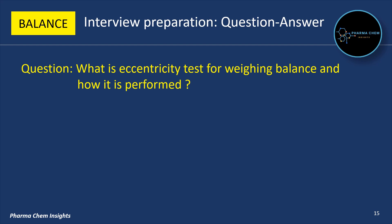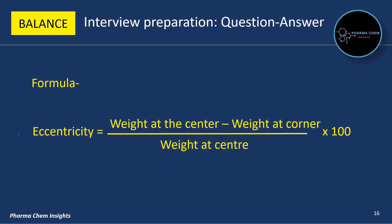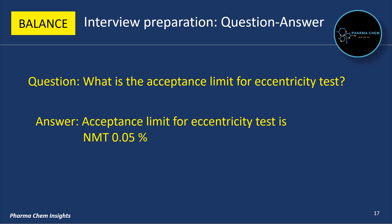Next question: what is the eccentricity test for a weighing balance and how is it performed? For the eccentricity test, a weight of more than 30% of the balance capacity is selected and placed at the centre and all corners of the weighing pan to check eccentricity. As you can see in the figure, 5 positions are used: position 1 at the centre, then positions 2, 3, 4, and 5 at each corner. The formula is: Eccentricity = ((Weight at Centre − Weight at Corner) / Weight at Centre) × 100. The acceptance limit for the eccentricity test is not more than 0.05%.